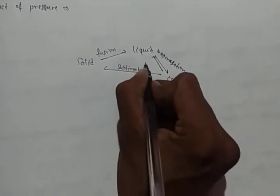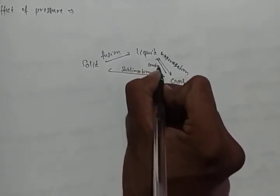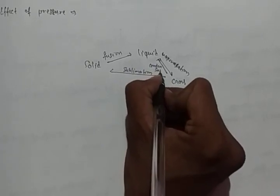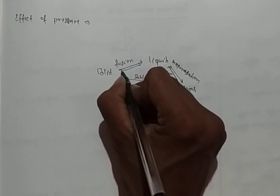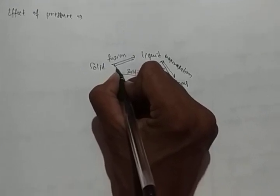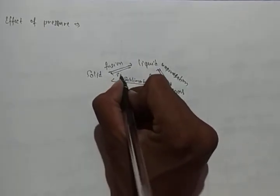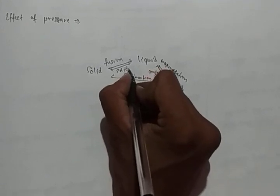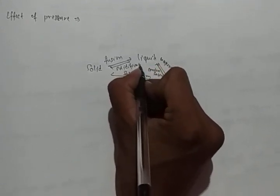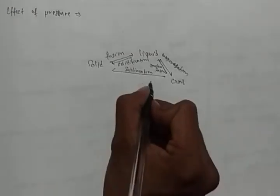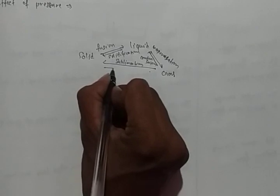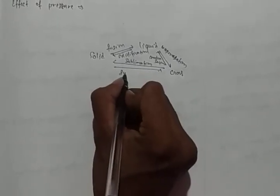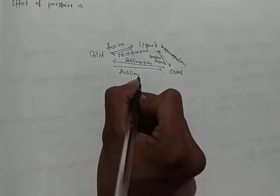When gas changes to liquid form we call it condensation. When liquid changes to solid form we call it solidification. When gas changes directly to solid, or solid changes directly to gas, we call it sublimation.